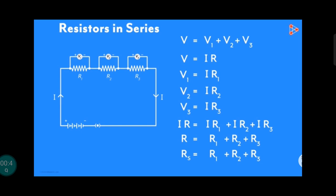Potential drop across the first voltmeter V1 is equal to I into R1. Across the second voltmeter V2 is equal to I into R2. Across the third voltmeter V3 is equal to I into R3.